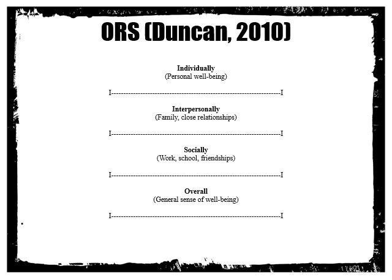The ORS contains four items: individually, interpersonally, socially, and overall. Individually asks about a person's personal well-being. Interpersonally asks about a person's family and close relationships and how well those are going. Socially asks the client about broader relationships in their macro system — things like work, school, and friendships. Overall rates a general sense of well-being.